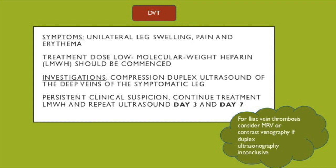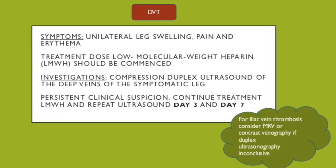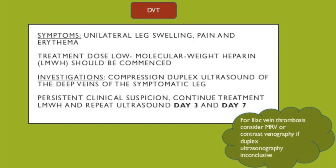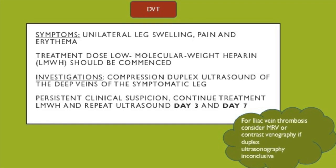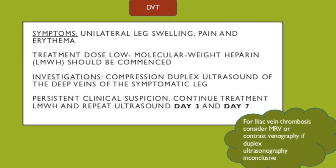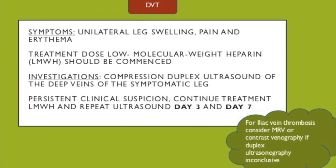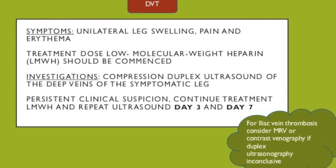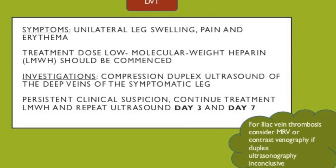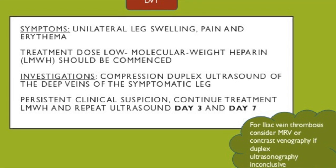The article then discusses DVT and PE in depth. Symptoms of DVT are unilateral leg swelling, pain, and erythema. Treatment is low molecular weight heparin, and this should be commenced as soon as DVT is suspected. Investigations include compression duplex ultrasound of the deep veins of the symptomatic leg. If there is persistent clinical suspicion despite a negative Doppler, this should be repeated on day 3 and day 7. For iliac vein thrombosis, consider an MRV or contrast venography if duplex ultrasonography is inconclusive.